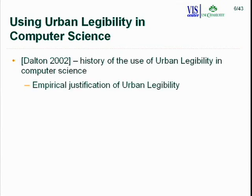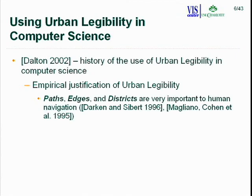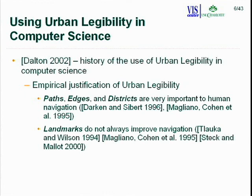One group tried to justify whether urban legibility actually makes sense by determining if these elements are important to human navigation. They found that paths, edges, and districts are very important, but landmarks are questionable — some groups find them useful, others find them totally useless. The element of nodes has been hard to quantify, so not much research has been done there.